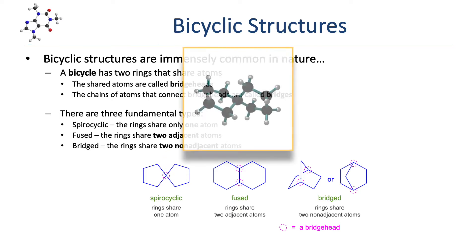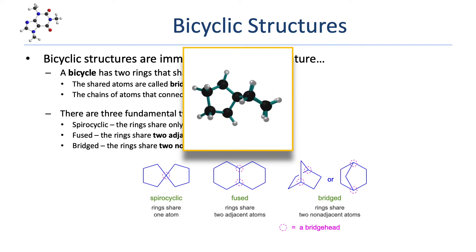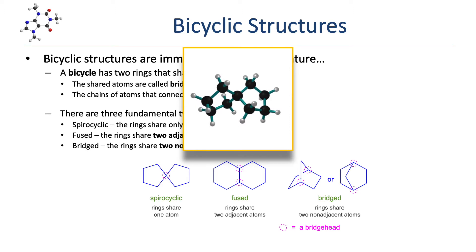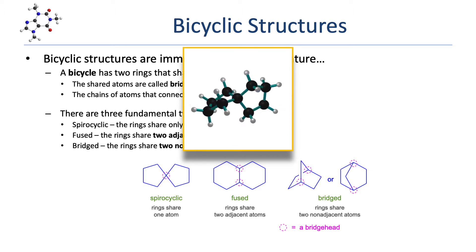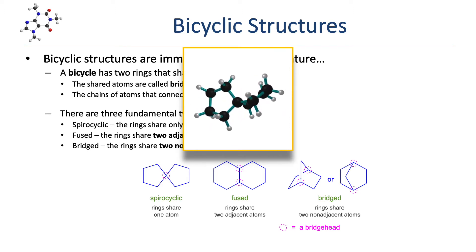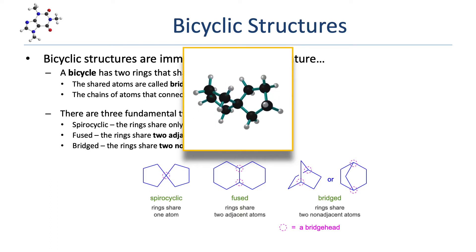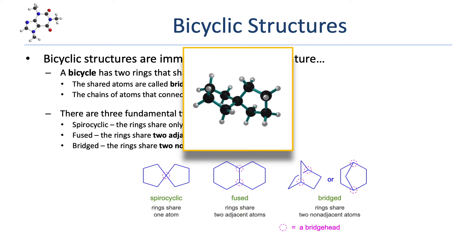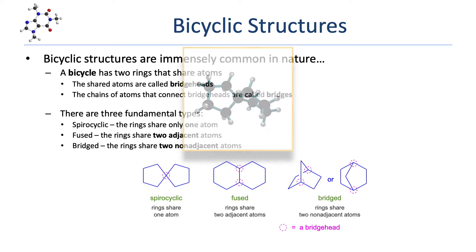Here is a 3D model of that same spirocyclic compound. Notice that the two rings are actually perpendicular to one another, which is not immediately obvious in the original 2D skeletal structure. Because of this, the spirocenter of a spirocycle is often drawn using dashes and wedges to better represent that 3D shape.